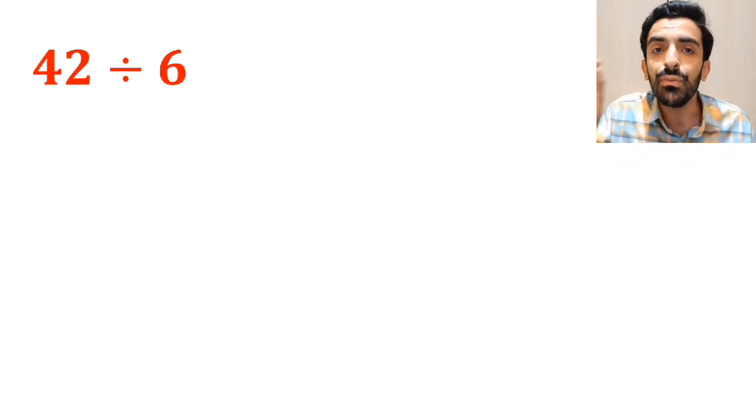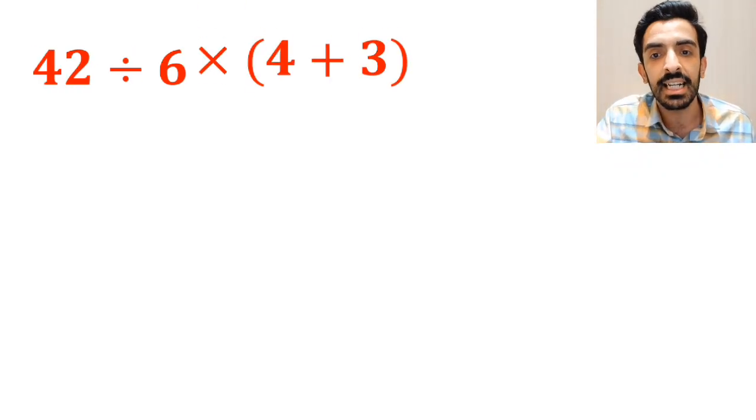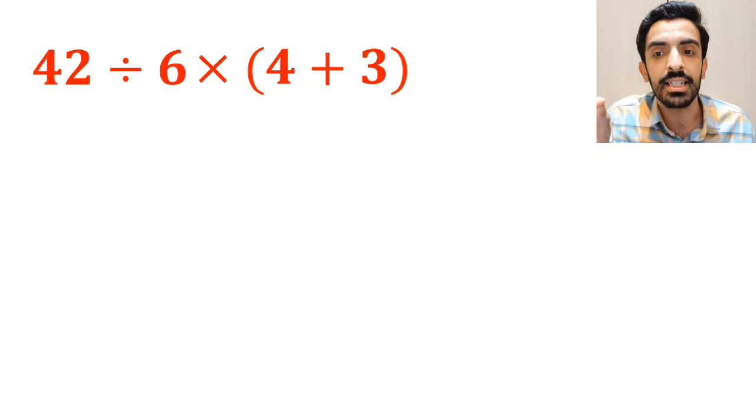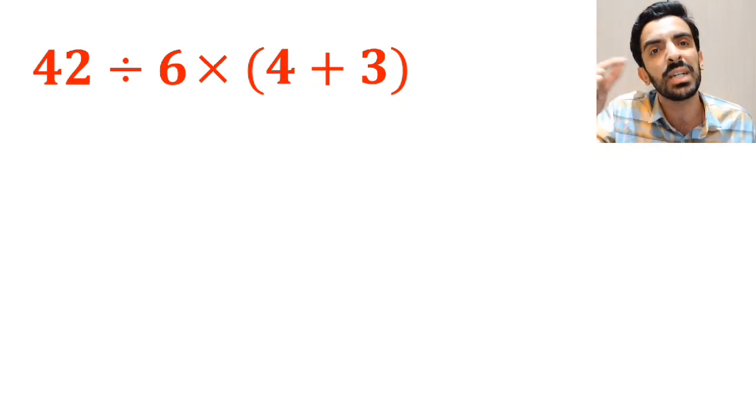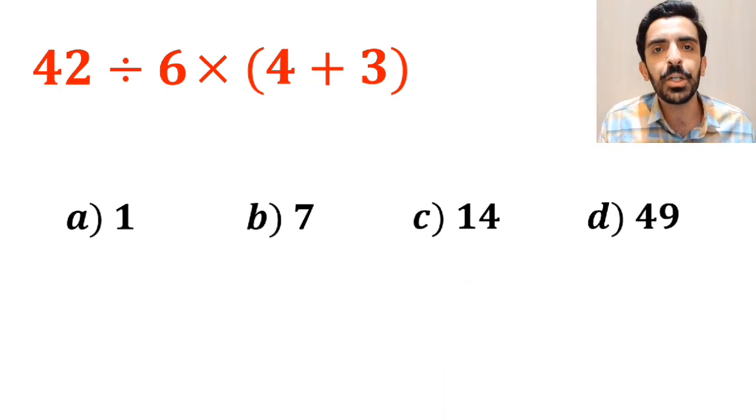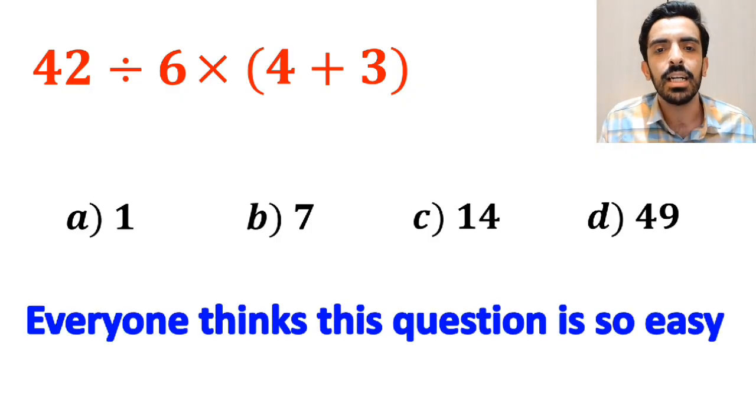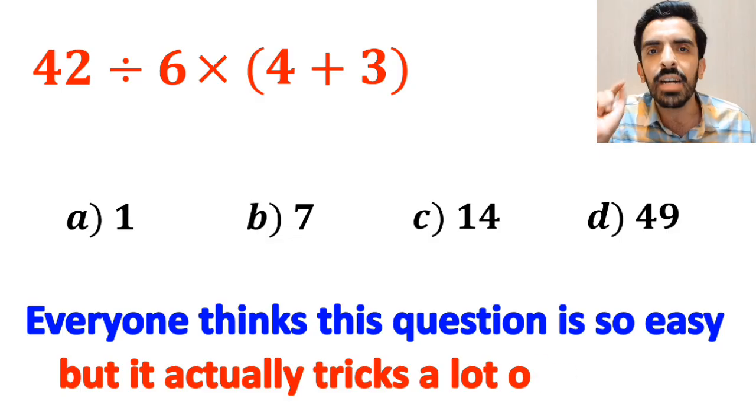What is the value of the expression 42 divided by 6 then times open parenthesis 4 plus 3 close parenthesis? Which option do you think is the correct answer to this question? Everyone thinks this question is so easy, but it actually tricks a lot of people.